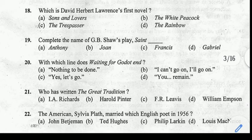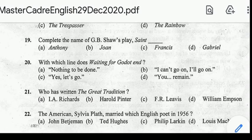Question number 20: with which line does Waiting for Godot end? Correct answer: option C — 'Yes, let's go.' The novel ends with this line.